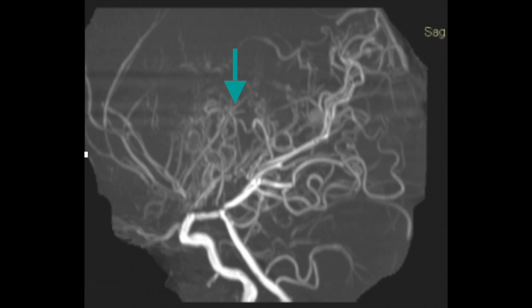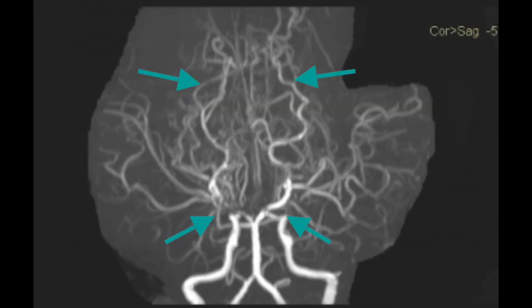Supraclinoid segments of both internal carotid arteries and M1 segments of both middle cerebral arteries are grossly narrowed. A1 segments of both anterior cerebral arteries appear attenuated, with the left A1 segment barely visualized. Reformation of distal anterior and middle cerebral arteries is seen with multiple prominent lenticulostriate and thalamostriate collaterals. Mild to moderate stenosis of P1 and P2 segments of the right posterior cerebral artery is seen with luminal irregularity.